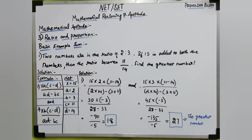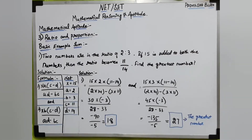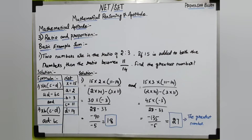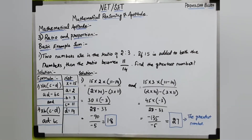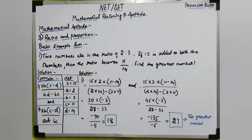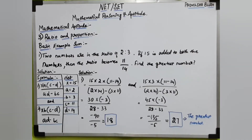Next formula: X into B = 15 into 3 into 11 minus 14, divided by A into D minus B into C, which is 2 into 14 minus 3 into 11. So AD is 28 and BC is 33. 15 into 3 is 45, 11 minus 14 is minus 3, so 45 into 3 is 135 divided by 5, which gives 27.